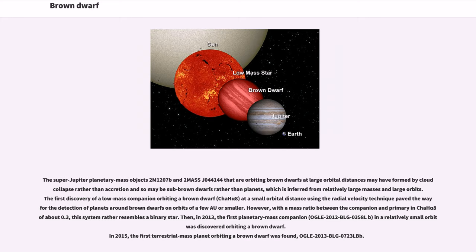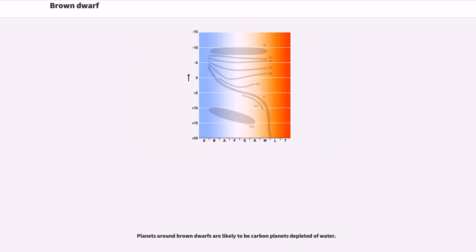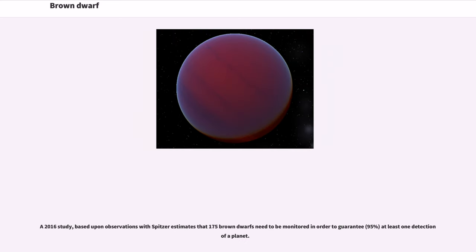Disks around brown dwarfs have been found to have many of the same features as disks around stars. Therefore, it is expected that there will be accretion-formed planets around brown dwarfs. Given the small mass of brown dwarf disks, most planets will be terrestrial planets rather than gas giants. If a giant planet orbits a brown dwarf across our line of sight, then because they have approximately the same diameter, this would give a large signal for detection by transit. The accretion zone for planets around a brown dwarf is very close to the brown dwarf itself, so tidal forces would have a strong effect. Planets around brown dwarfs are likely to be carbon planets depleted of water. A 2016 study based upon observations with Spitzer estimates that 175 brown dwarfs need to be monitored in order to guarantee at least one detection of a planet.